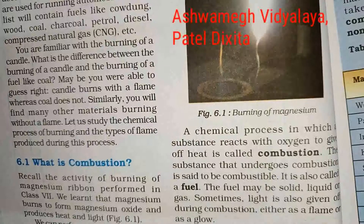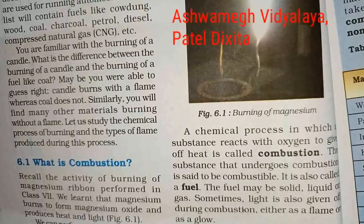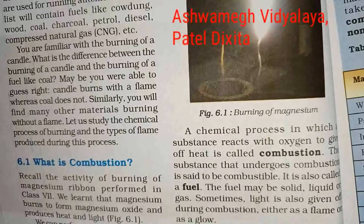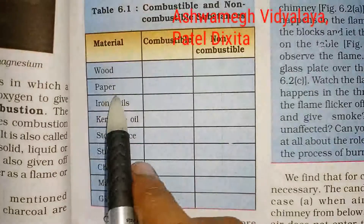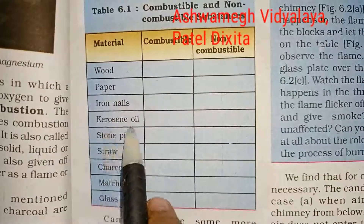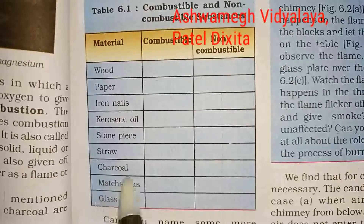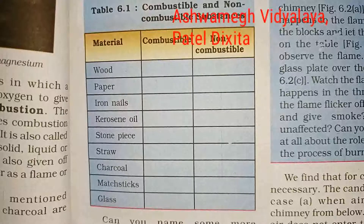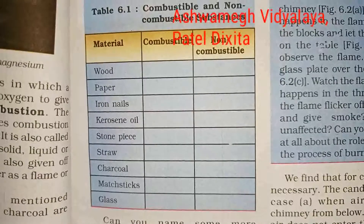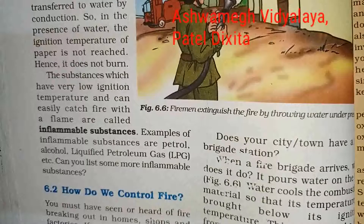Then we discussed about some combustible substances and some non-combustible substances, like wood, paper, iron nails, kerosene oil, stone, straw, charcoal, matchstick, and glass.